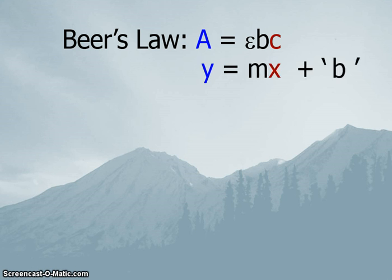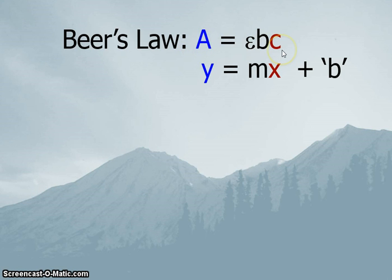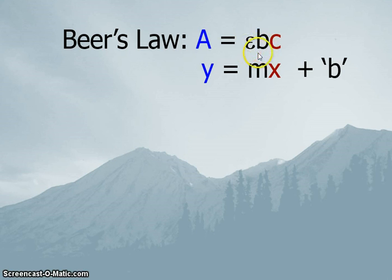We are going to exploit this linear relationship because what we want is a mathematical relationship between the absorbance of the solution and its concentration — very similar to the sugar and soda lab we did a couple weeks ago. Absorbance is going to be our Y, concentration will be our X, and our slope will be numerically equal to molar absorptivity times B, with a Y-intercept as well.